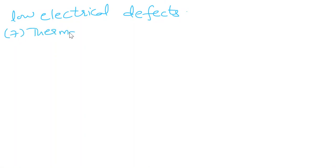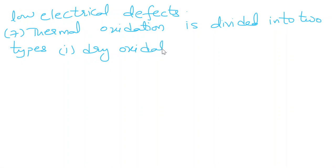Thermal oxidation is divided into two types. One is dry oxidation, one is wet oxidation. So here we can classify both. In this dry oxidation, here wet oxidation.